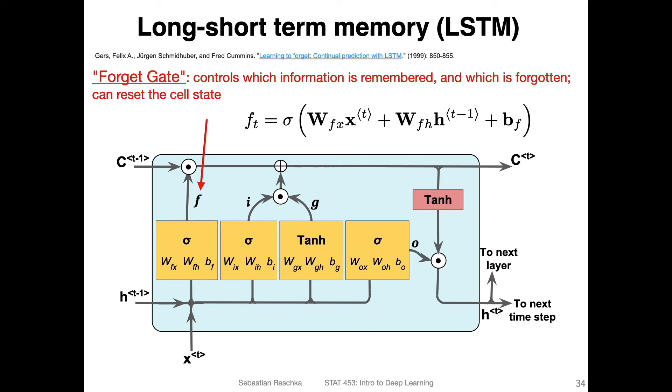We have this forget gate here. It controls essentially which information is remembered and which one is forgotten, and it can reset the cell state. Here we receive the input at the current time step and we receive the input from the previous hidden state like in a regular RNN layer, and then it goes through some computation here. This computation is essentially involving two matrices like we had before.